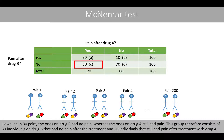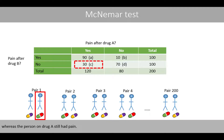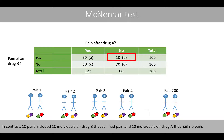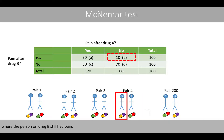However, in 30 pairs, the ones on drug B had no pain whereas the ones on drug A still had pain. This group consists of 30 individuals on drug B that had no pain after the treatment, and 30 individuals that still had pain after treatment with drug A. In contrast, 10 pairs included 10 individuals on drug B that still had pain, and 10 individuals on drug A that had no pain.